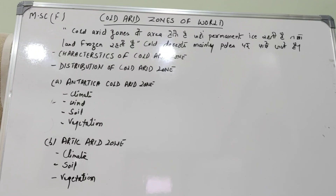Arctic vegetation: cold temperature, wind velocity, और physiological dryness के कारण vegetation scattered और small patches में होती है। यहाँ lichens की लगभग 2000 varieties, mosses, ferns, और alpine plants पाए जाते हैं। Alpine plants में brightly colored flowers होते हैं।